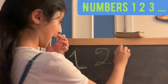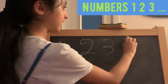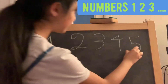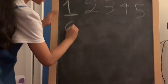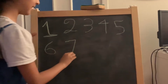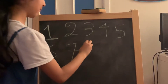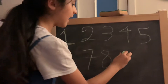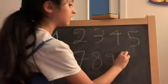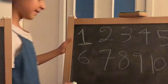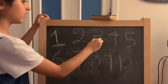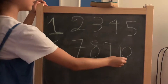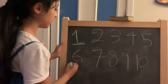Number three, number four, number five, number six, number seven, bravo! Number eight, and also the last one — you can do this. Number nine. So that's ten. One, two, three, four, five, six, seven, eight, nine, ten. Now we're going to do the new numbers.